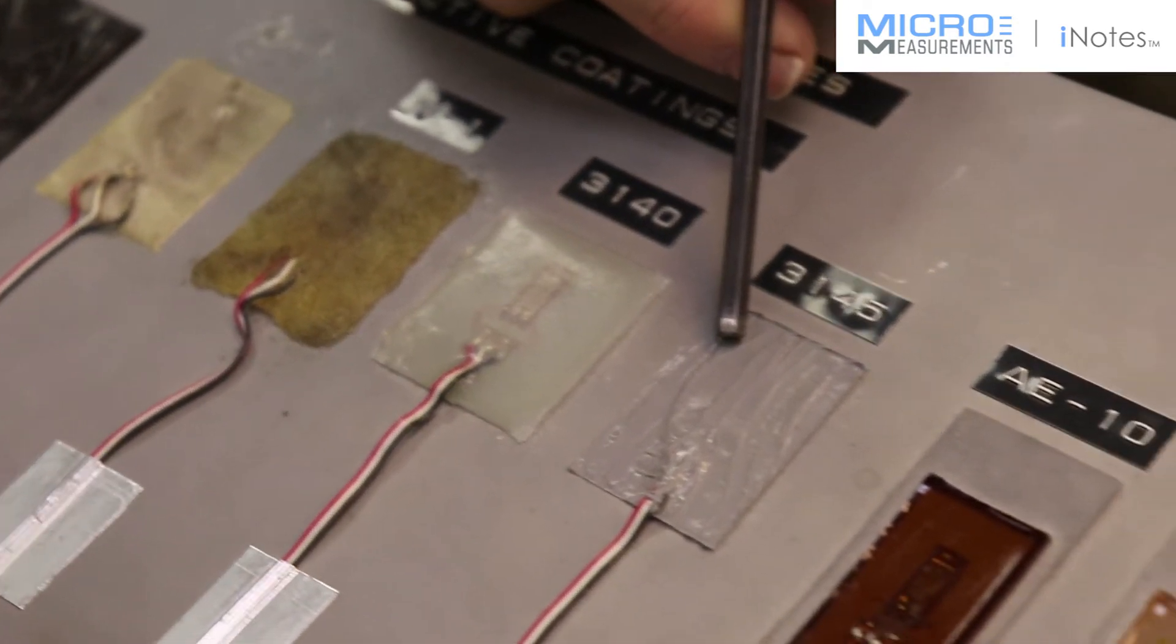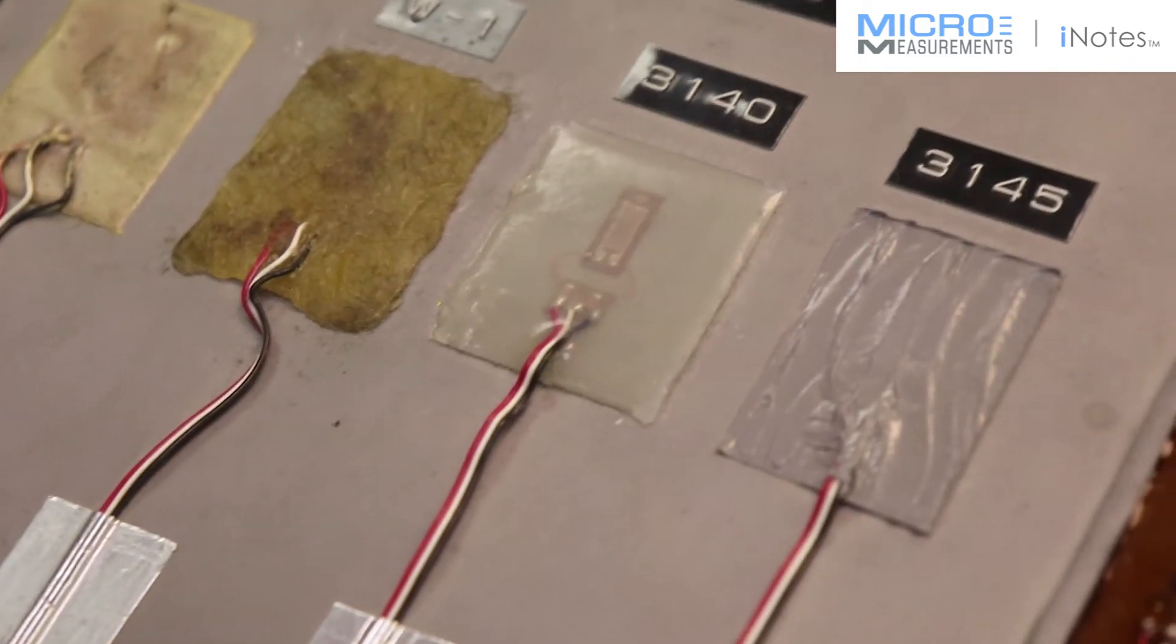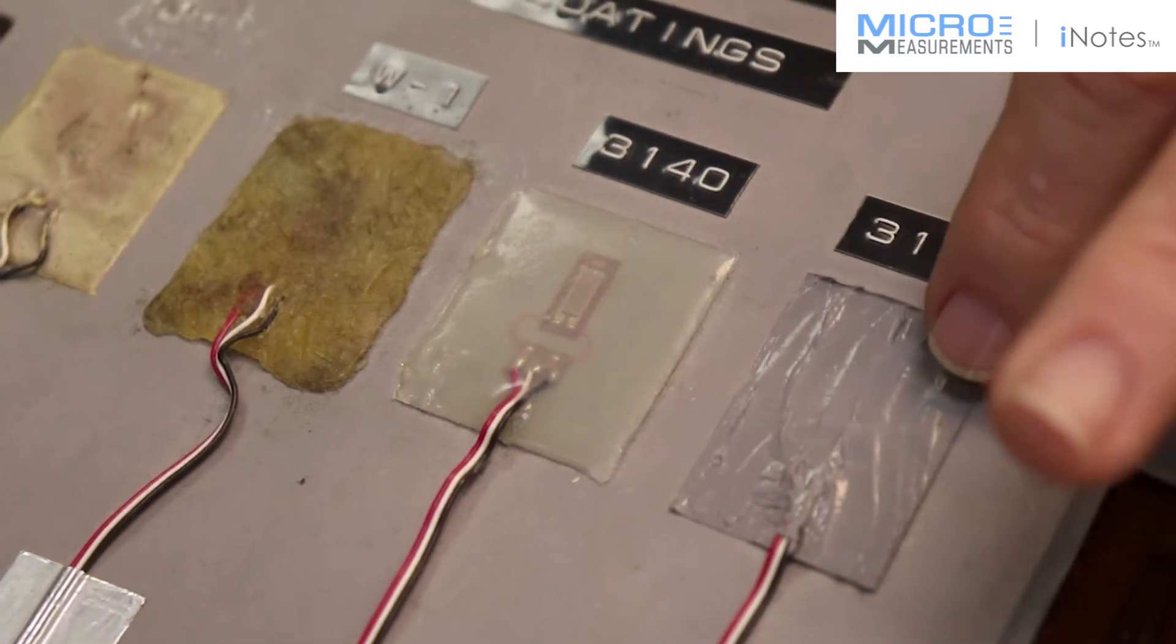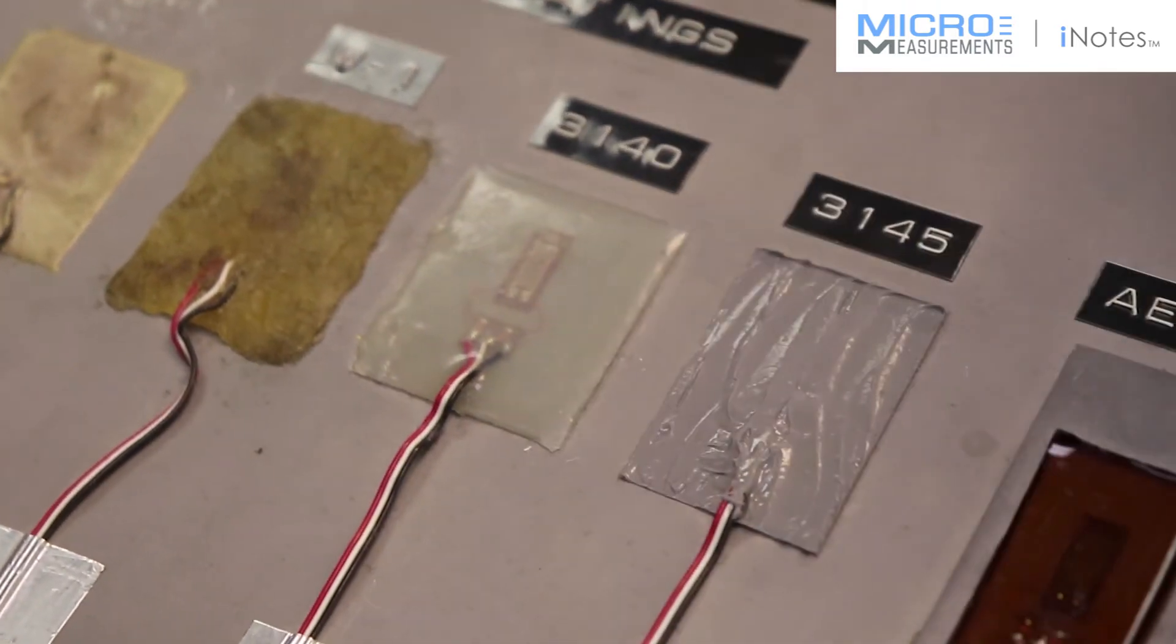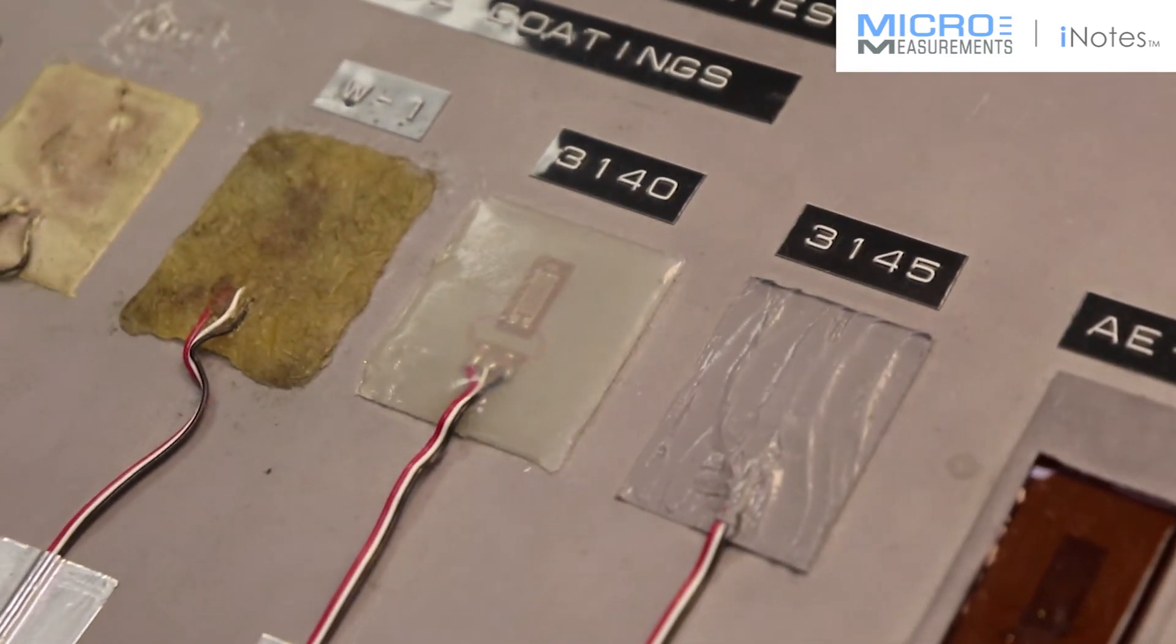The next one beside it is 3145. These two have essentially the same characteristics in terms of high temperature resistance and flexibility. But the 3145 has a filler in it so you can put it onto a vertical surface. If you put the 3140 on a vertical surface, it would run off.